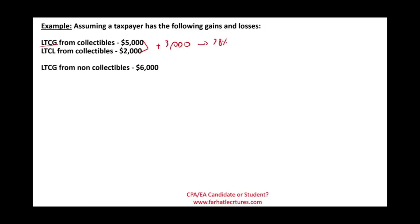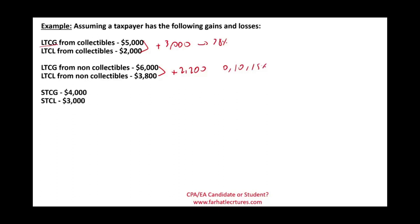Long-term capital gain, non-collectible, $6,000, and long-term capital loss, non-collectible, $3,800. When we net them, we have a net gain of $2,200, and this is going to be subject to 0%, 15%, or 20% depending on the taxpayer's tax status. Short-term capital gain of $4,000 and short-term capital loss of $3,000 — netted out, we have a $1,000 short-term capital gain, which is taxed at the ordinary income tax rate.